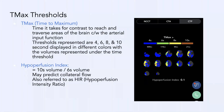Tmax >4 seconds can be within normal range but could also be pathologic. Once above eight or ten seconds, tissue is more likely to infarct. Six seconds is what you want to look at for the most part.